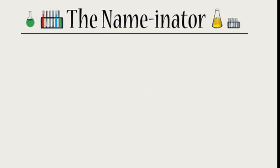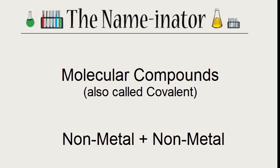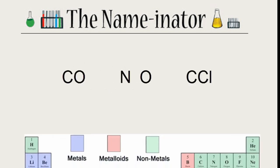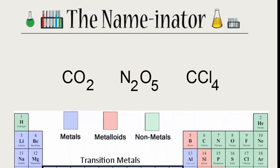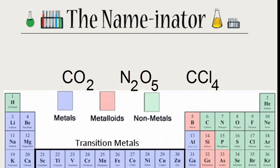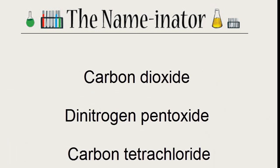We'll wrap up with molecular compounds — that's where we have a nonmetal bonded to a nonmetal. The formulas will look like CO2, N2O5, or CCl4. The names use prefixes to show the number of each type of element. For example: carbon dioxide, dinitrogen pentoxide, or carbon tetrachloride.